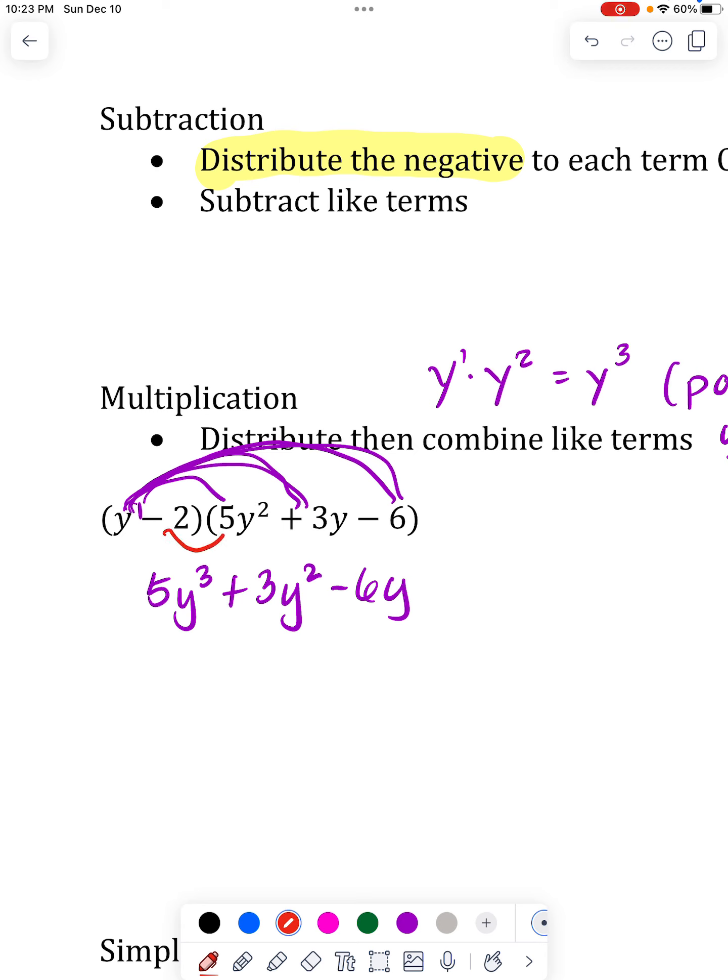-2 times 3y is -6y. And then -2 times -6 is a 12. And that way it's easier for me to find my like terms because they're just in these columns.